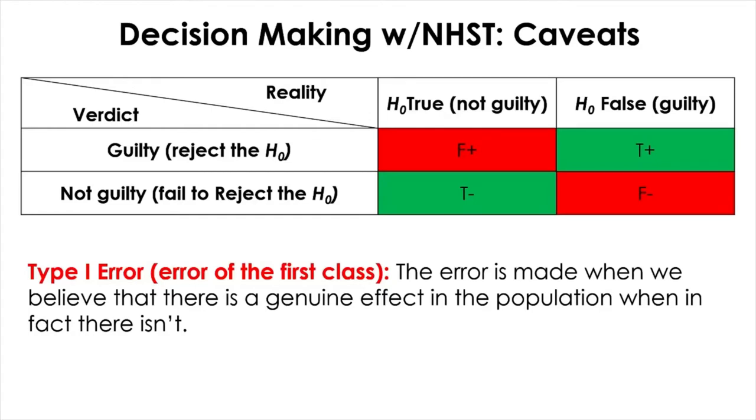That concern is echoed in the nominal alpha of 0.05, which is an explicit decision rule to reject the null only when the likelihood of observing the data or statistics as extreme as or more extreme is less than or equal to 1 out of 20, or 5 out of 100 times, instead of being 50-50. To better illustrate this point, let's take a rather extreme example.